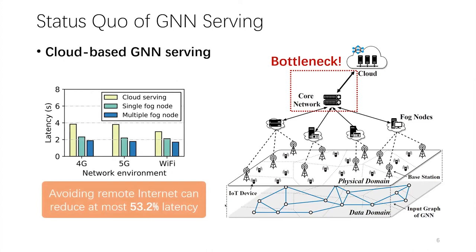The cloud-serving paradigm works well for many existing CNN and RNN-serving systems. However, it can fall short for GNNs in total latency, as the input of GNN is a data graph of geo-distributed end devices that span spatially. Uploading data from massive IoT devices via the remote internet can incur considerable transmission overhead. As measured in real settings, syncing the GNN workload from cloud to fog nodes can reduce latency by up to 53.2% across all kinds of network environments.